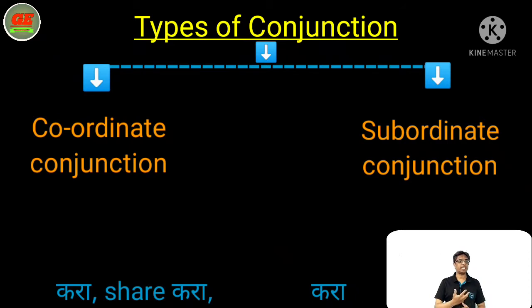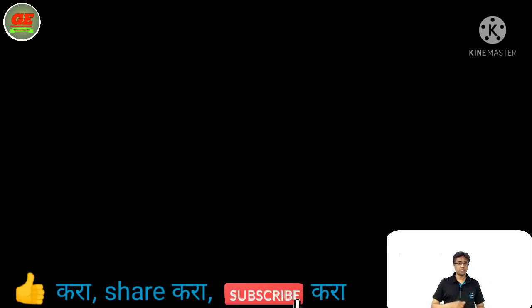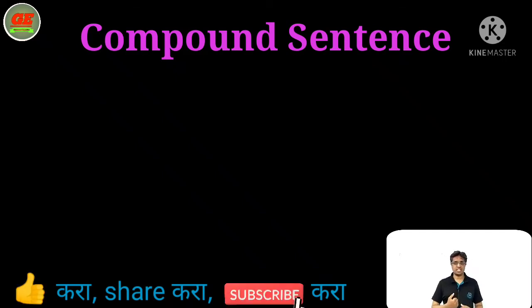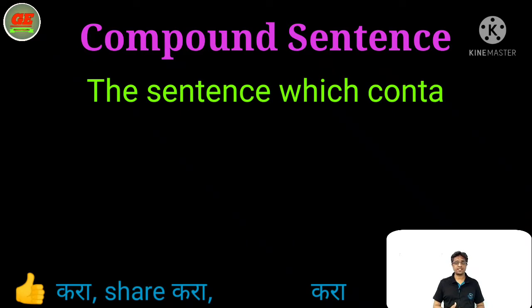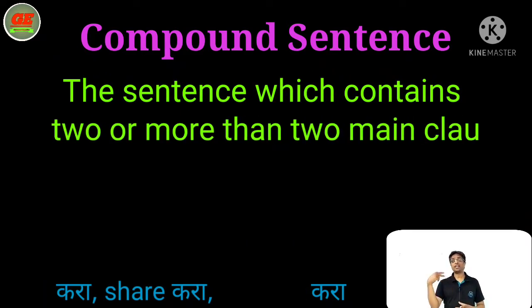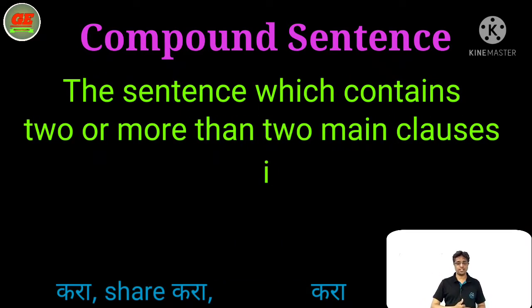Let's see now the second type of sentence — that is the compound sentence. Definition: the sentence which contains two main clauses or more than two main clauses is called a compound sentence.